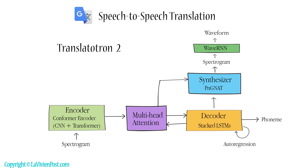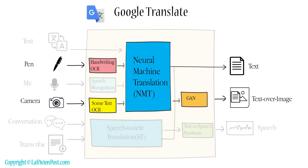After the synthesizer generates spectrograms, a neural vocoder such as WaveNet or WaveRNN converts the spectrograms to time-domain waveforms.